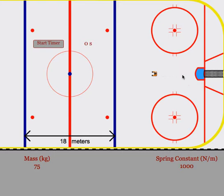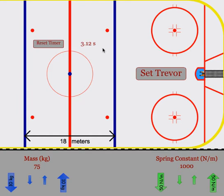His elastic energy will turn into kinetic energy. I suggest timing him from blue line to blue line in order to get his speed. Once we have his speed, we can then look at how the speed is affected by the different parameters.